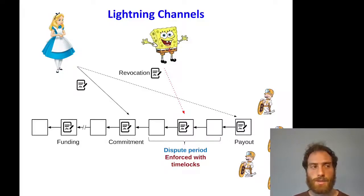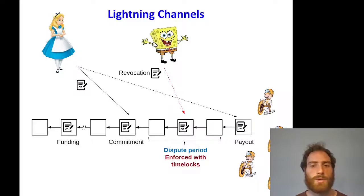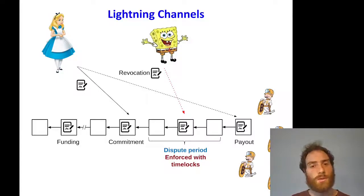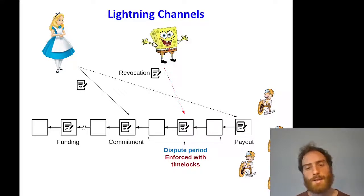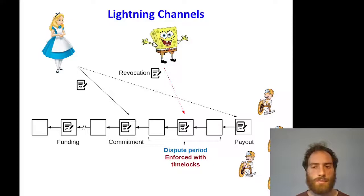This has a very specific assumption: that when Bob publishes the revocation transaction, it will be included in the next block or one of the blocks soon after — essentially that miners will actively include it. However, this may not be the case if miners are not honest. In practice, miners are more likely to be rational, wanting to maximize their coins, than to include all the transactions they see. So miners may prefer to ignore the revocation transaction and instead wait for the time-lock to expire and add the payout transaction, which gives the money to Alice — if the payout transaction gives them a much bigger fee.